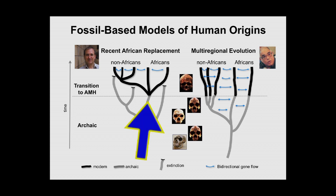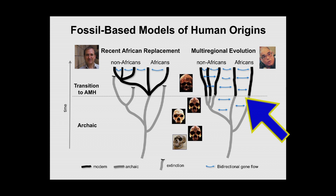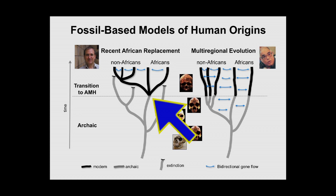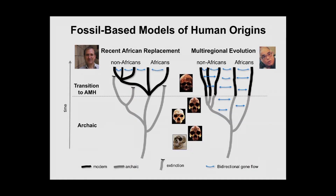The extreme alternative is the recent out-of-Africa model, or complete replacement model, which suggests that all traits making us modern trace to one place — a single population in Africa. Whereas the multi-regional model predicts some genes would trace back to many different ancestors across Eurasia, the replacement model predicts all genes would trace back to one local group in Africa. Those are the predictions of the two models. What genetic evidence led us so strongly toward the recent replacement model?